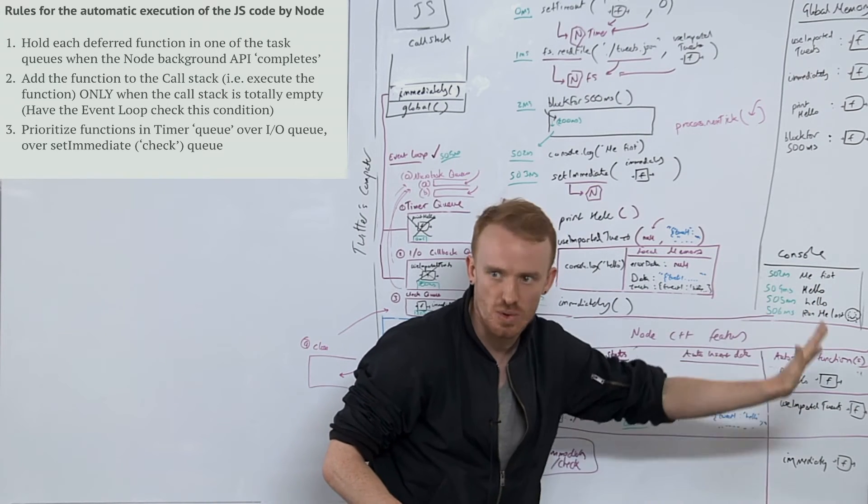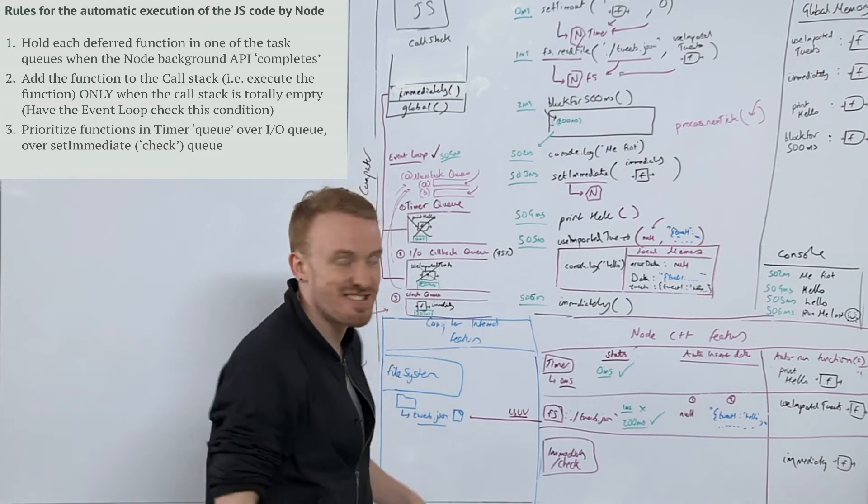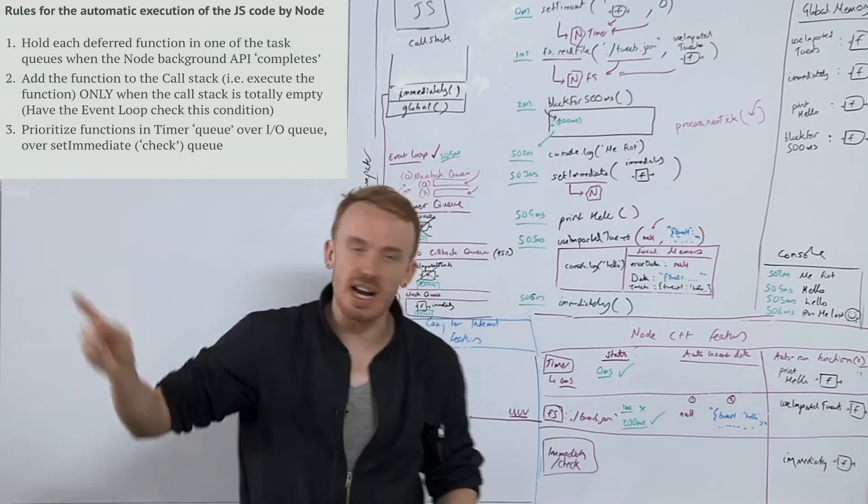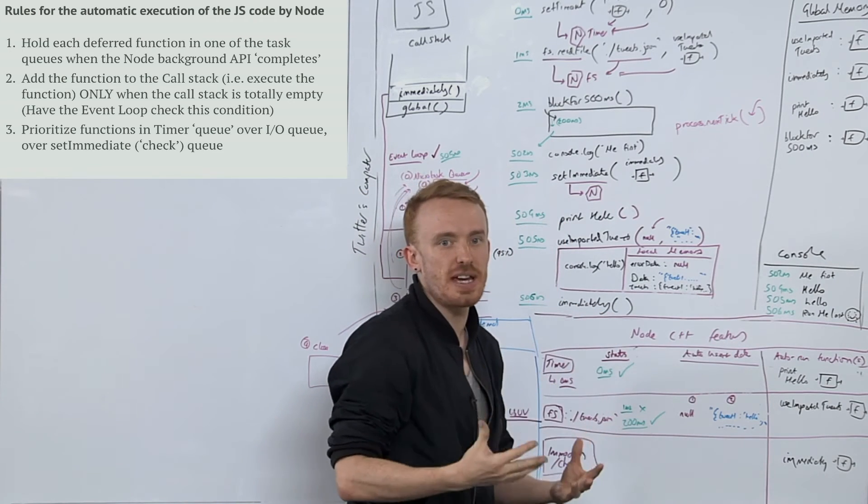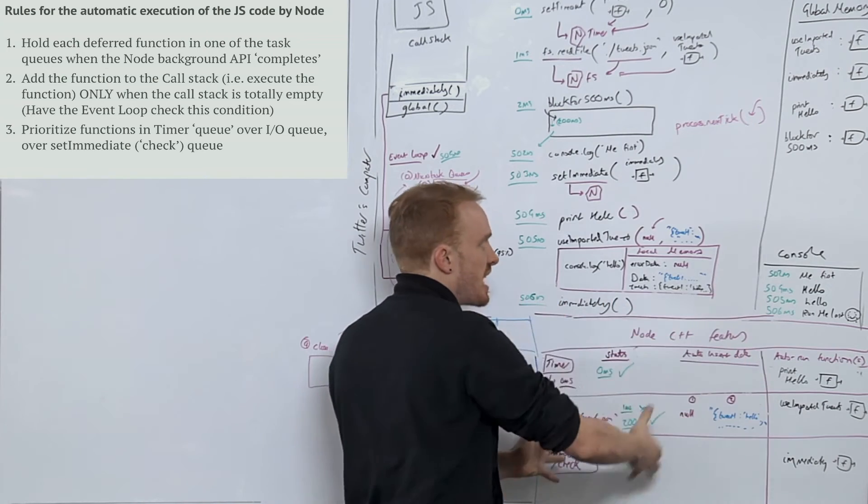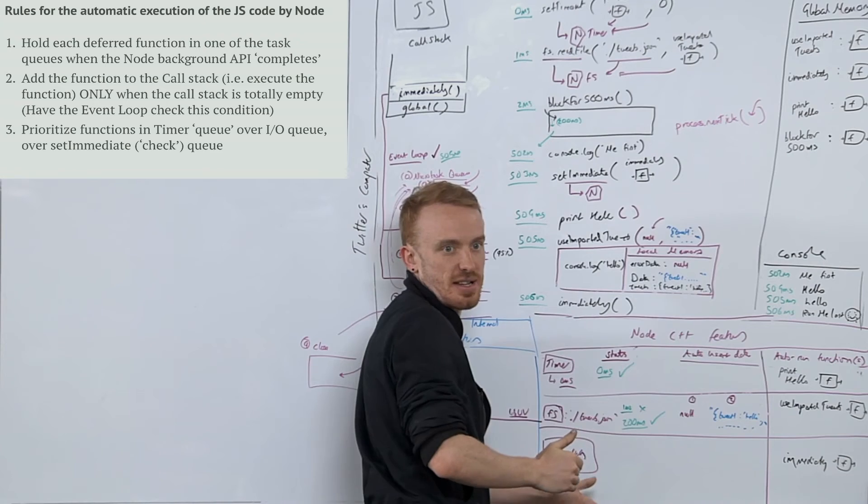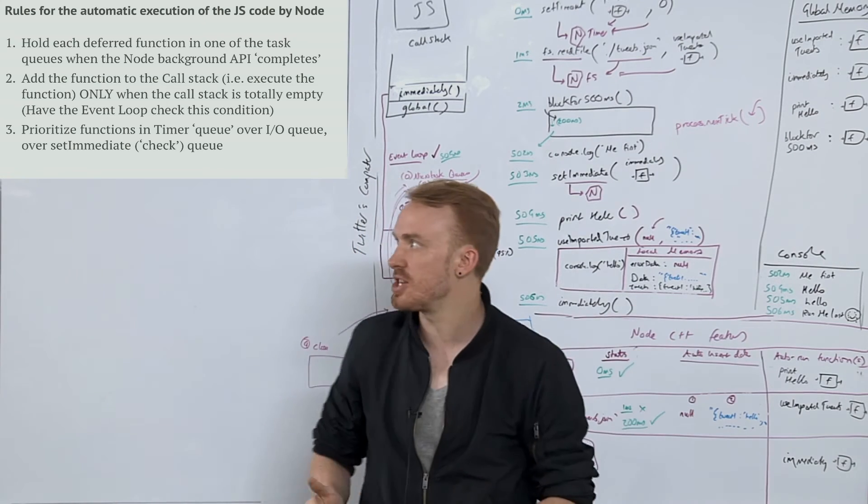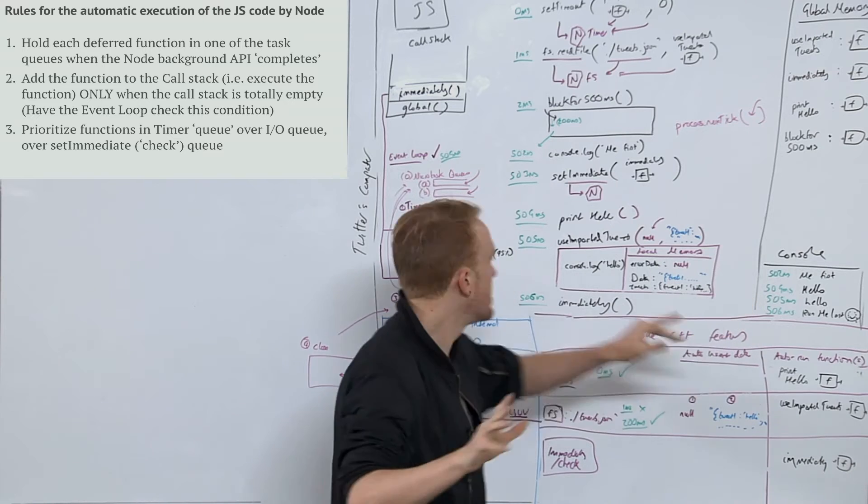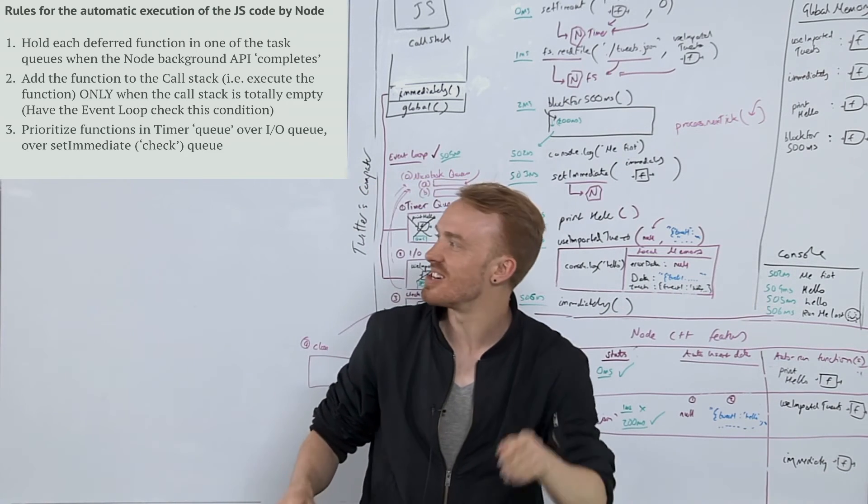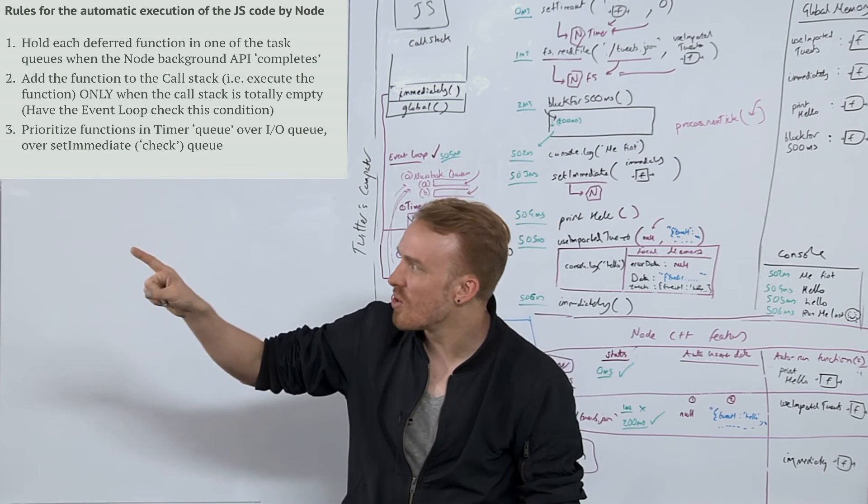Hold each deferred, I call these deferred functions that we didn't run ourselves, they're going to be auto-run later. They defer, delayed, to auto-run later in one of the task queues. When the Node background API, these are actually the C++ features, they're technically known as APIs. Interface is a word for any functionality that's not in my language, but in someone else's. When any of the background Node C++ features complete, the auto-run function, don't auto-run them, queue them up to be auto-run.